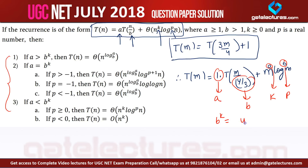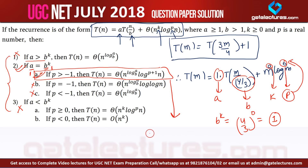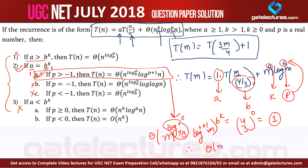Now b^k = (4/3)^0 = 1, and a = 1, so a equals b^k. This matches the case where a = b^k with p = 0, so the first sub-case applies. The solution is Θ(n^(log_b a) · log^(p+1) m) = Θ(m^(log_{4/3} 1) · log^1 m) = Θ(m^0 · log m) = Θ(log m).